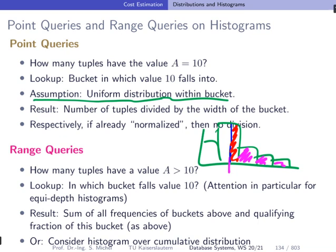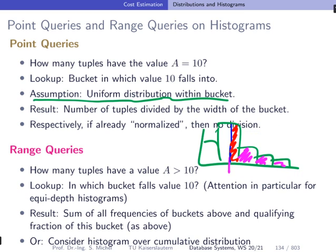For equi-width histograms it may be more obvious how to do this, but the principle is the same for equi-depth histograms. You always fully count buckets that fall entirely within the query range, and are more careful when a bucket is only partially covered — taking only the relevant fraction.